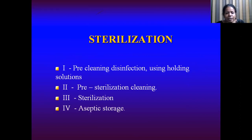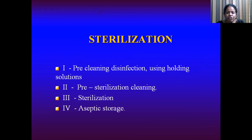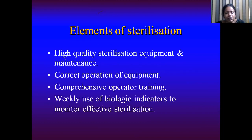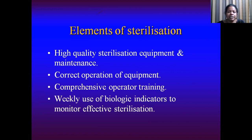Next comes sterilization, which is done in four steps. The first step is pre-cleaning disinfection using a holding solution: after the instrument or surface has been cleaned of residue, a holding solution is used for pre-cleaning disinfection. Then comes pre-sterilization cleaning where the holding solution is removed completely before the instrument is subjected to the sterilization procedure, and finally it is stored aseptically. For sterilization you need high-quality sterilization equipment and maintenance, correct operation of equipment, comprehensive operator training, and weekly use of biologic indicators to monitor effective sterilization. If any one of these is not working, the entire procedure will not be effective.